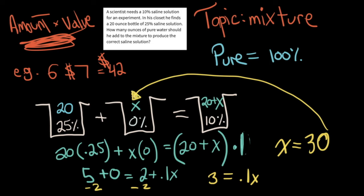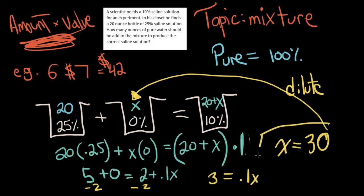You needed 30 ounces of water to produce that solution. Does that make sense? Remember, we always want to check. Imagine you had 20 ounces of 25% solution and you add water. Water is diluting it down to a 10% solution. Absolutely that makes sense. So those are mixture problems.